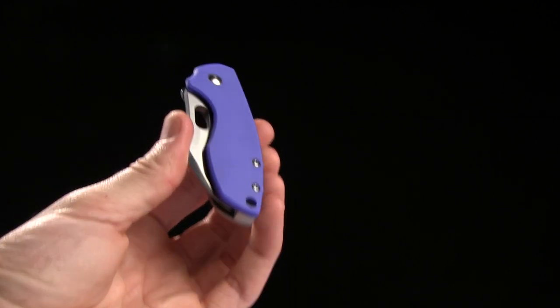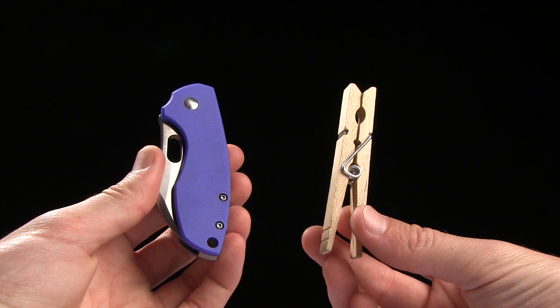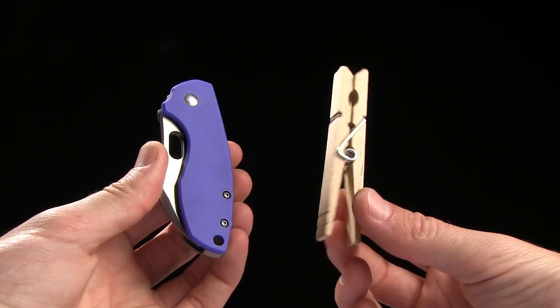Overall weight is 2.98 ounces, and here's a clothespin for size comparison. This is your tactical clothespin, by the way.